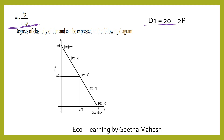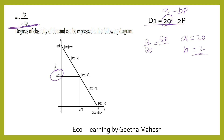Let us take a cross-check with a consumer demand function: Q equals 20 minus 2P. So here A equals 20 and B equals 2. Let us consider the point where price equals A divided by 2B. That is 20 divided by 2 times 2, which equals 20 divided by 4, giving price equal to 5.